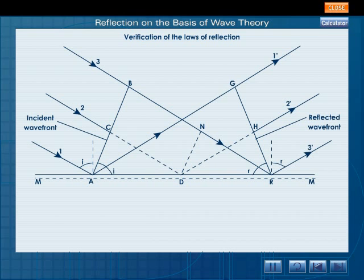Now let's prove the first law of reflection. Since the incident wave front AB, the reflecting surface MM, and the reflected wave front RG are all perpendicular to the plane of the paper, normals to them also lie in the same plane. But the normals to AB and RG are the incident ray and the reflected ray respectively.